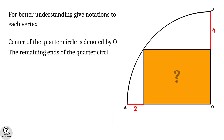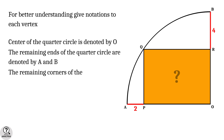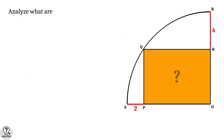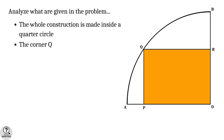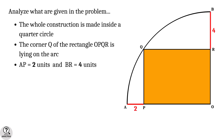The remaining ends of the quarter circle are denoted by A and B. The remaining corners of the rectangle are denoted by P, Q and R. Now let's analyze what is given in the problem. The whole construction is inside a quarter circle. Corner Q of rectangle OPQR lies on the arc, and AP equals 2 units and BR equals 4 units.